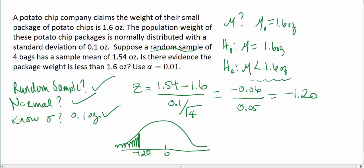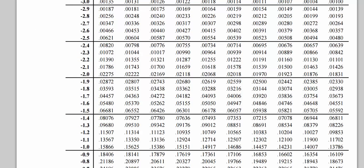To do this we can go over to the standard normal table and look up negative 1.2. Since it's 0 for the hundreds place it's going to be the first p-value right here, or first proportion or area under the curve, which is 0.11507.